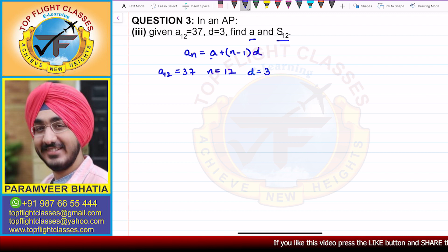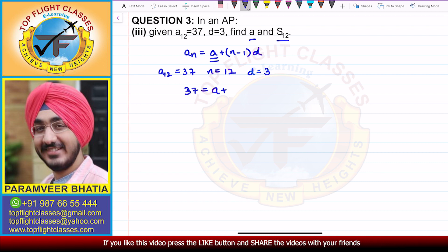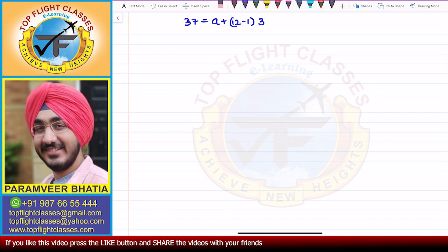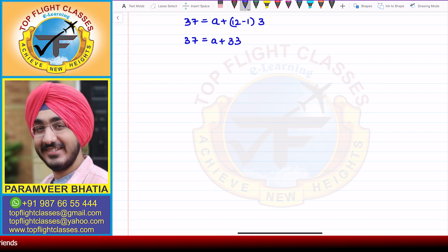We can find the value of a from here. Putting in the values: 37 is equal to a plus 12 minus 1 times 3. That gives us 37 is equal to a plus 11 into 3, which is 33. So a is equal to 37 minus 33, which is 4.